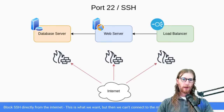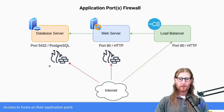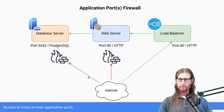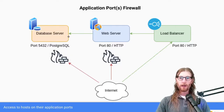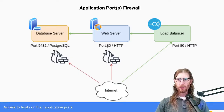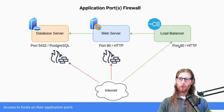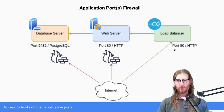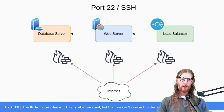For completeness, let's look at the application port firewall. We only want what absolutely needs to be accessible to the internet to be accessible. For the database server there's no legitimate reason for traffic to come from the internet, so we block port 5432 (PostgreSQL) and only allow that traffic from the web server. Port 80 on the web server should only be reachable from the load balancer. From the internet, only the load balancer has an open port — it's our legitimate entry point.